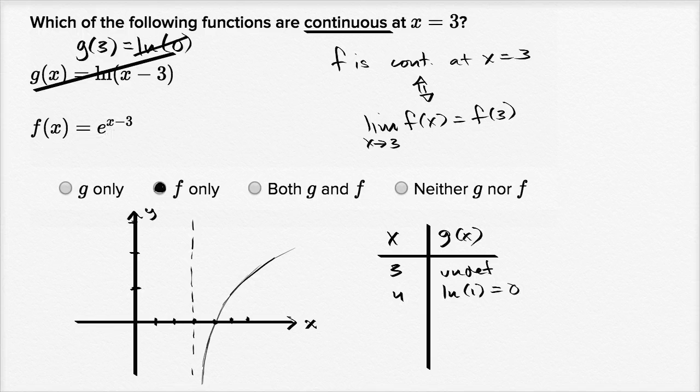Now f of x is a little bit more straightforward. f of three is going to be e to the three minus three, or e to the zero, so it's going to be one. So it's going to look something like this, something like that.